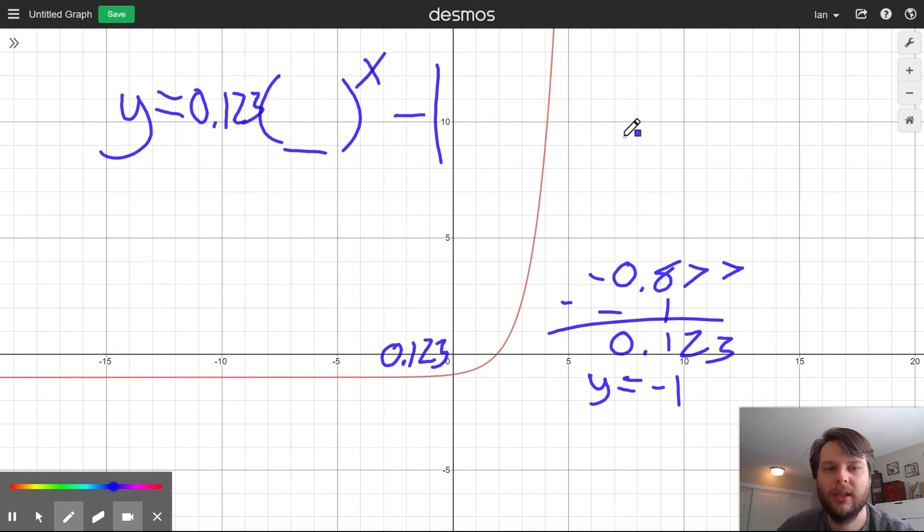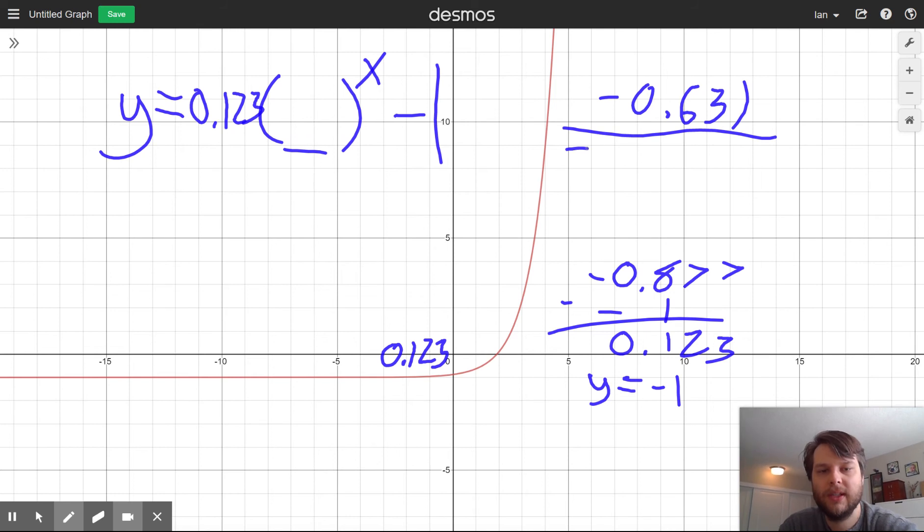Negative 0.631 minus negative 1. What does that give us? That gives us 0.369, if I'm not mistaken. 0.369.